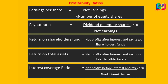Earnings per share is net earnings divided by number of equity shares. Payout ratio is dividend on equity shares divided by net earnings. Return on shareholders fund is net profit after interest and tax divided by shareholders fund. Return on total assets is net profit after interest and tax divided by total tangible assets. Interest coverage ratio — a very important ratio — is net profit before interest and tax divided by fixed interest charges. We will see this in a later video.